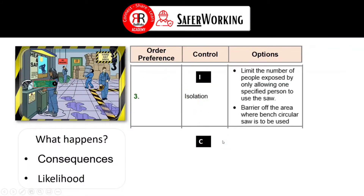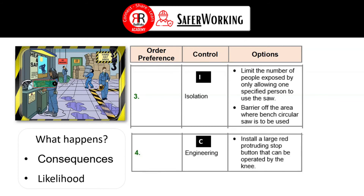I is for isolation. What can we do here? We can limit the number of people exposed by only allowing one specified person to use the saw. We could also barrier off the area where the bench circular saw is being used — this stops people walking towards the operator, potentially distracting her, and risking injury to both.